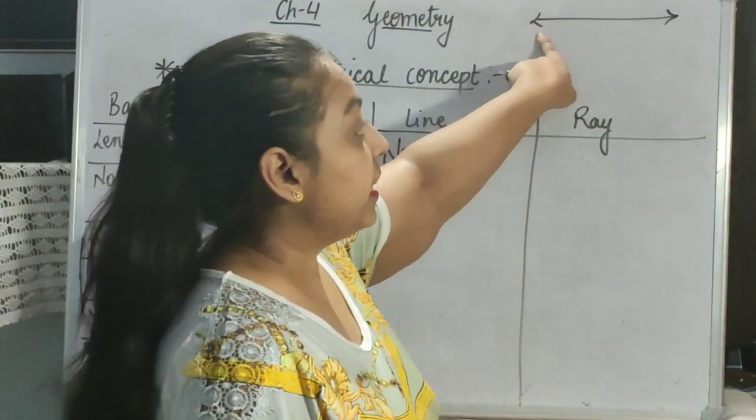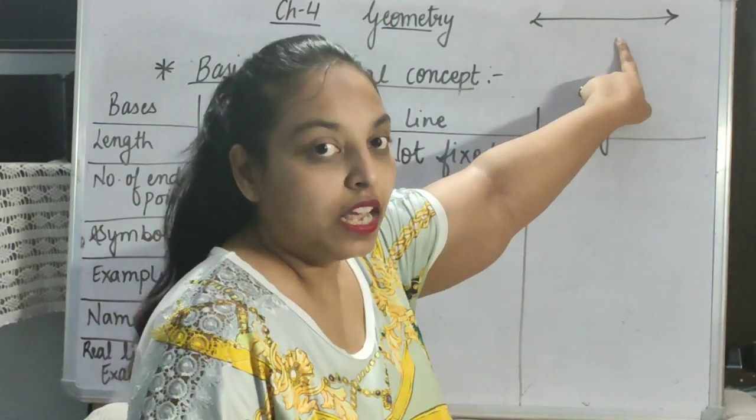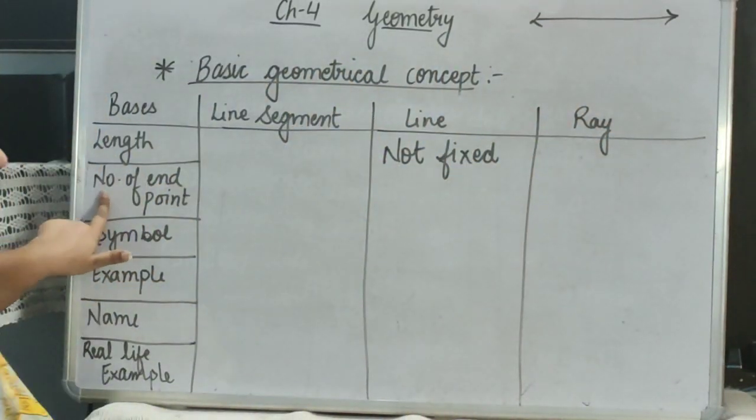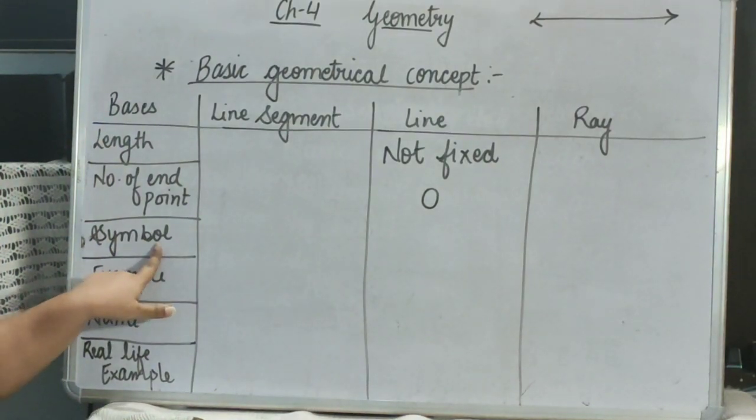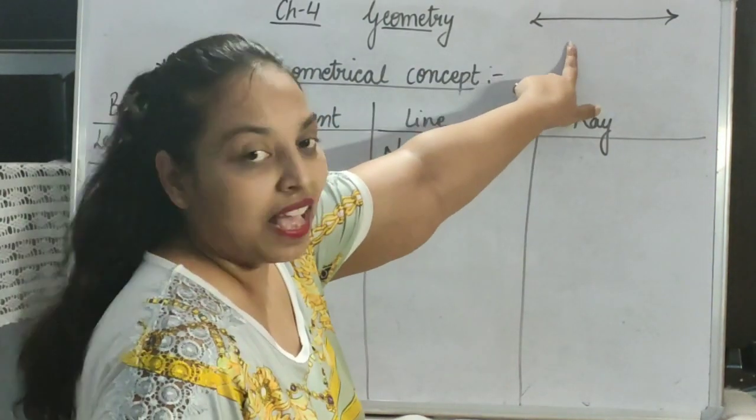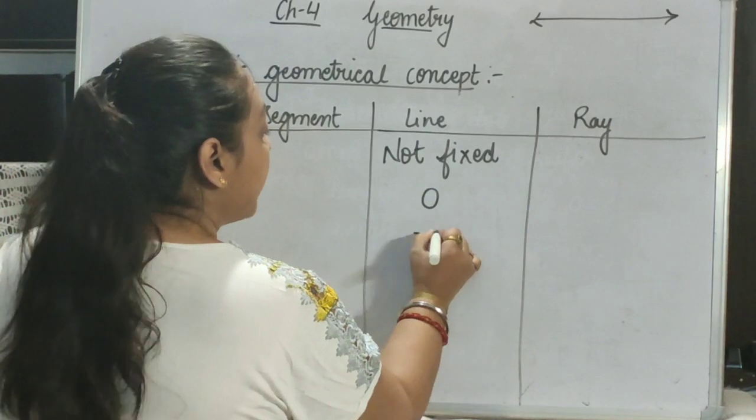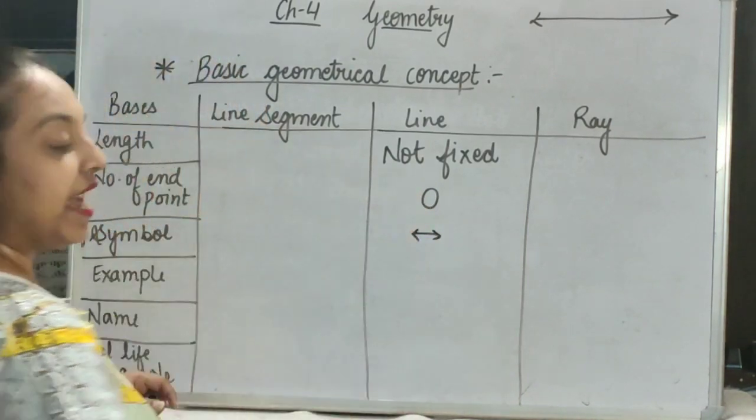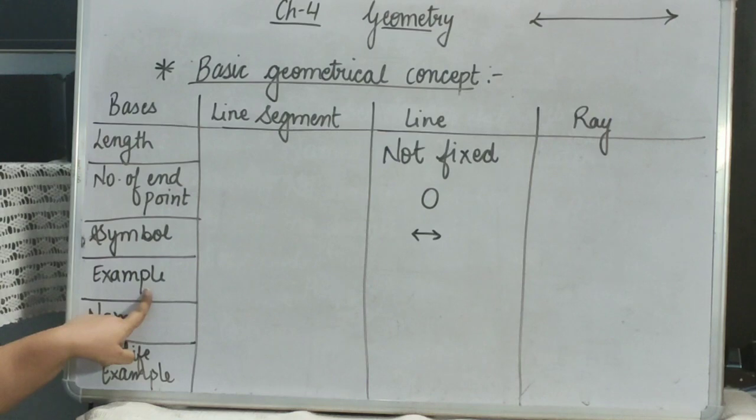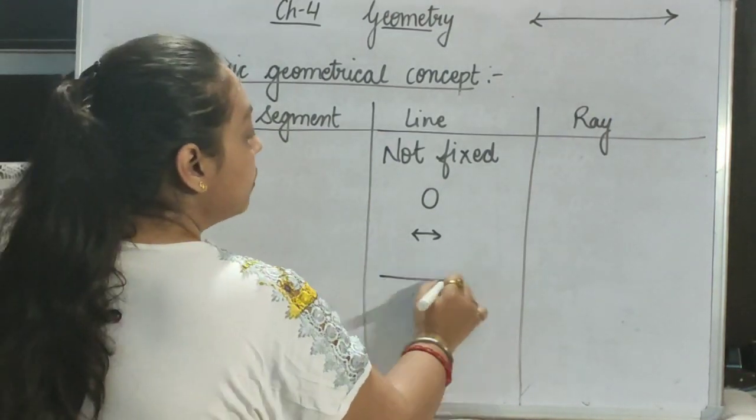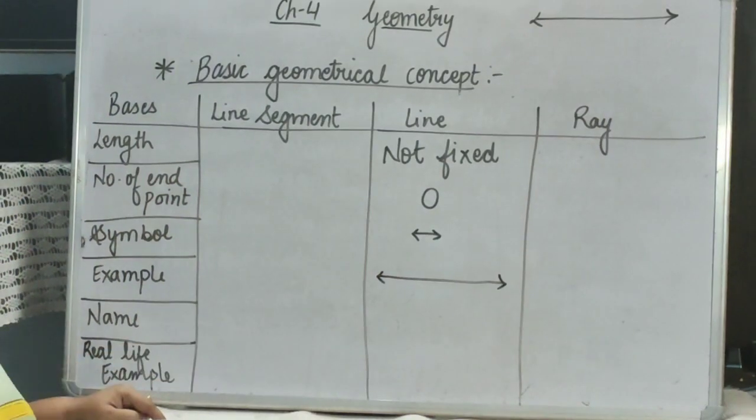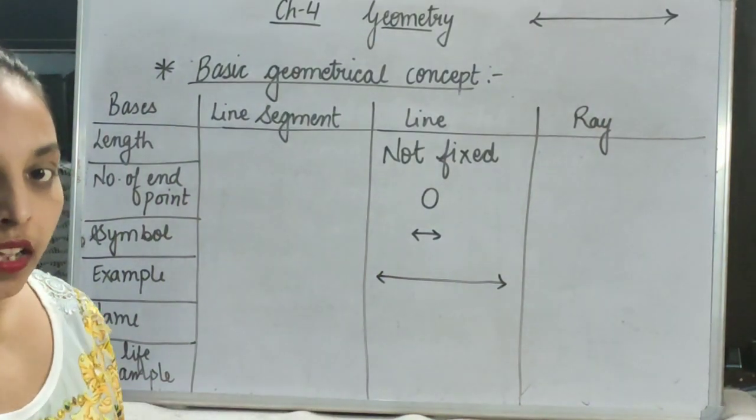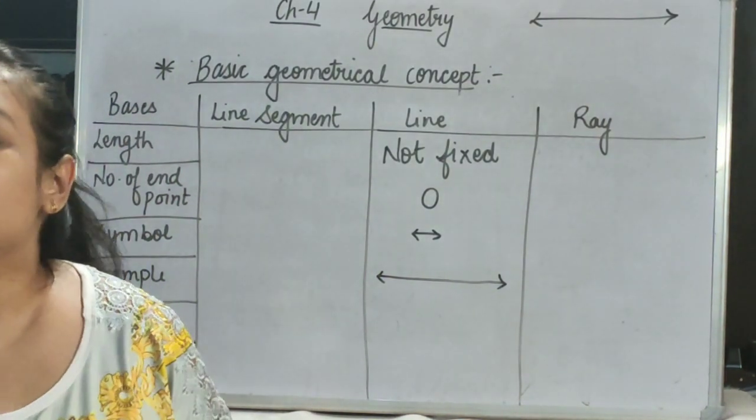And if you can see, this is moving in both the sides. So, the number of end point is 0. And, what will be the symbol of it? The symbol will be same as this, a line with two arrows at both ends. How can we draw the example for it? We can draw a line with two arrows at both the end. But, how can we name this line?